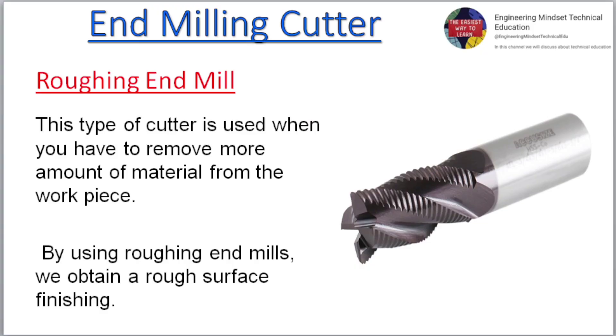Roughing end mill: This type of cutter is used when you have to remove a large amount of material from the workpiece. By using roughing end mills, we obtain a rough surface finishing.